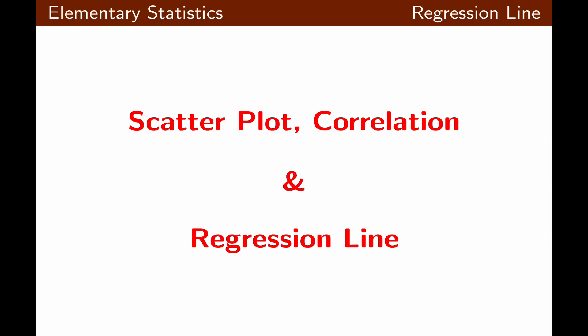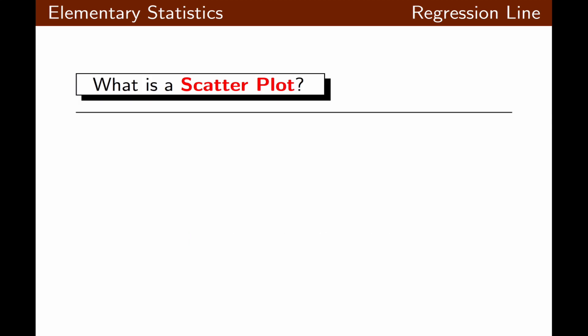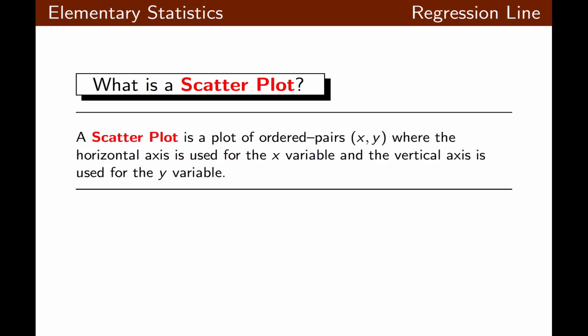In this lecture we're going to cover scatter plot, correlation, and regression line. A scatter plot is a plot of ordered pairs where we use the horizontal axis for x and the vertical axis for the y variable.